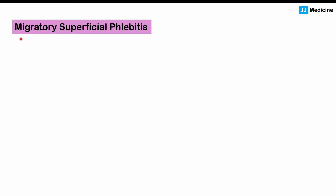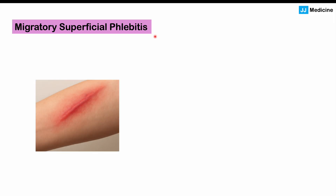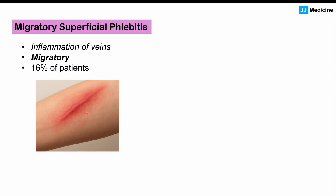Some other findings we can see in this condition include migratory superficial phlebitis. Phlebitis is inflammation of the veins, so there can be areas of the arms or legs with a red inflamed area over a vein. It's migratory, meaning it can move around — one spot at one time and another spot later. About 16% of patients with Buerger's disease will have migratory superficial phlebitis.